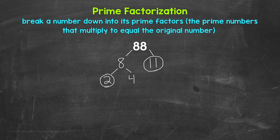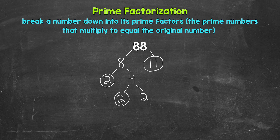But we can break 4 down further, so we need to think of factors of 4. Well, we know 2 times 2 is 4. So let's break 4 down into 2 and 2. Again, 2 is a prime number, so we are done here and here.